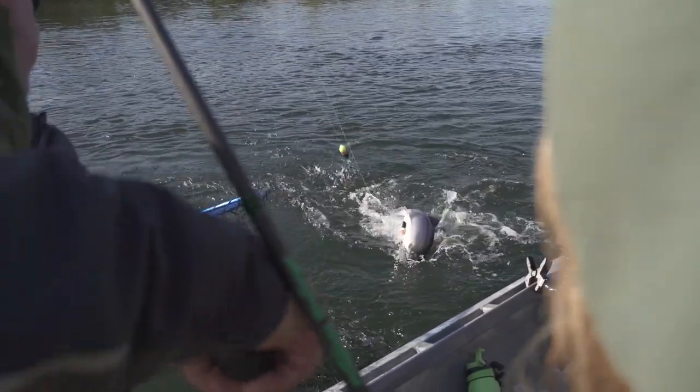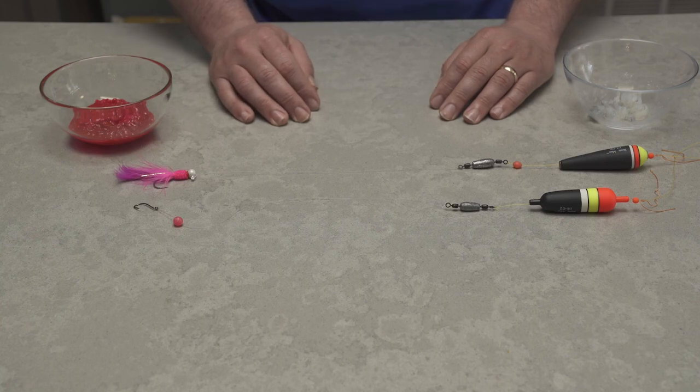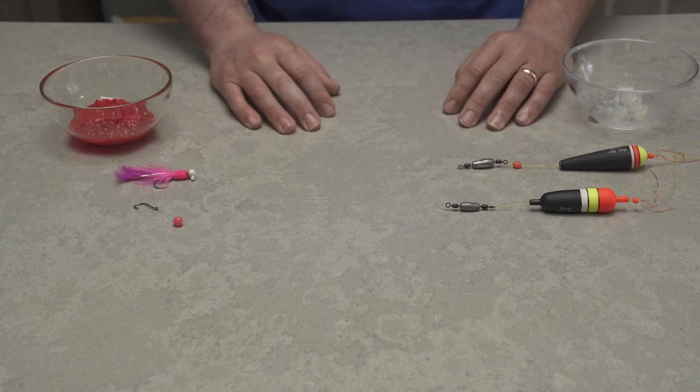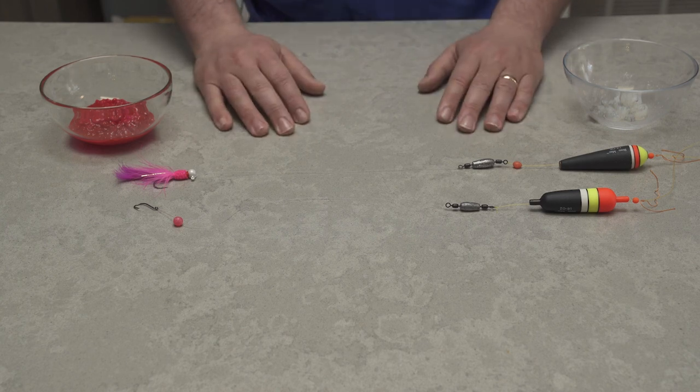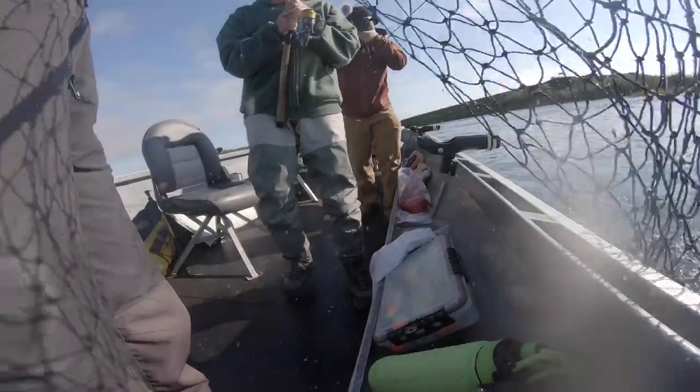Something else that we've noticed - we do a lot of side drifting or bobber dogging for kings with large soft beads and with cured roe as well. And there are days where for whatever reason two or three of the guides come in and they've got three or four sockeye in the boat and they caught them on eggs. We back bounce for kings both large soft beads and roe as well, and there are days again where all of a sudden you catch three or four sockeye. As it turns out, what's old is new again.